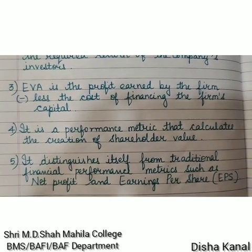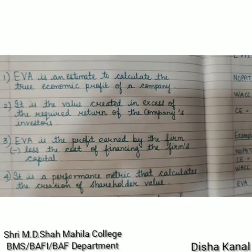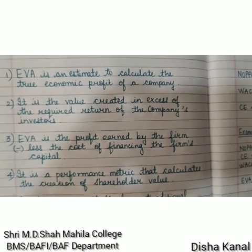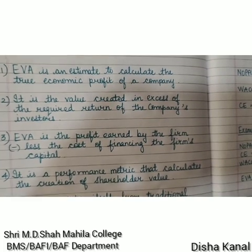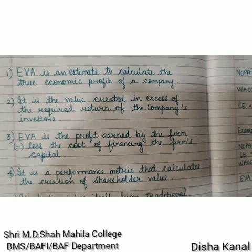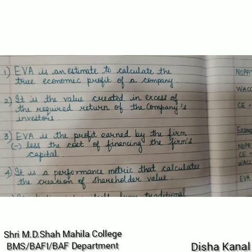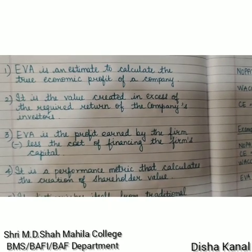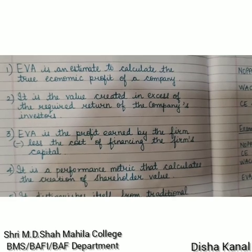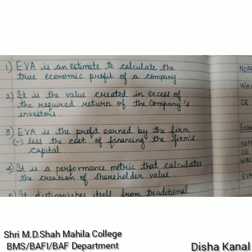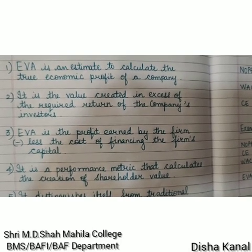To summarize EVA in five points: first, EVA is an estimate to calculate the true economic profit of a company; second, it is the value created in excess of the required return of the company's investors. For example, if the company's investors require a 10% return and the company actually earns 13%, the additional 3% is the EVA component because it is in excess of the investors' expectations.